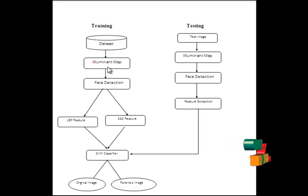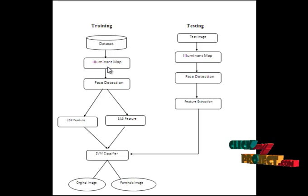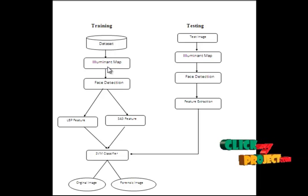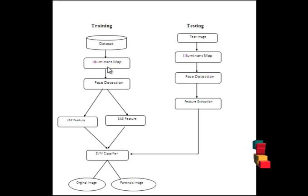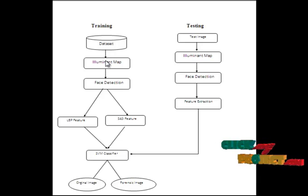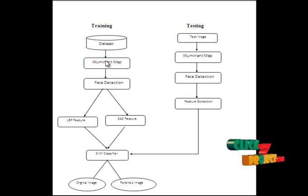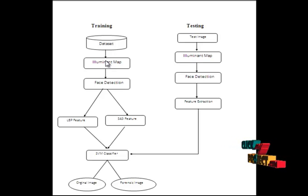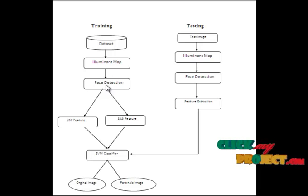We convert to the YCbCr color space, where Y is the luma component and Cb and Cr are the blue-difference and red-difference chroma components. From these components, we obtain the color map image, which is then passed to the face detection technique.